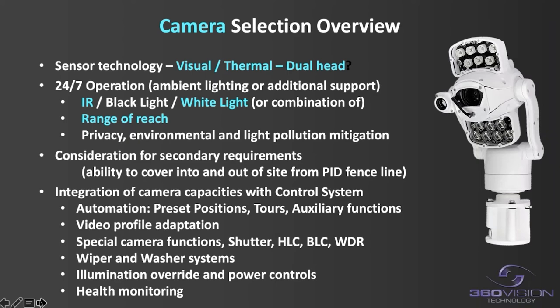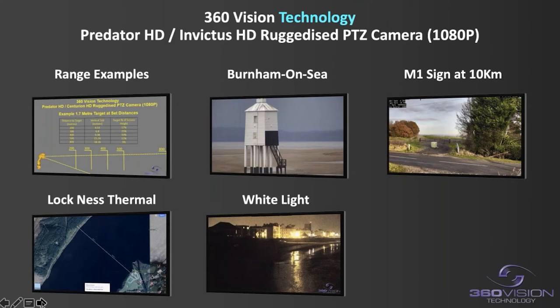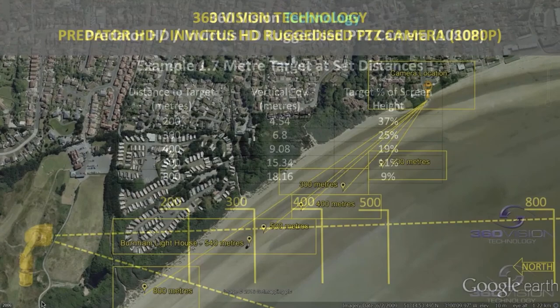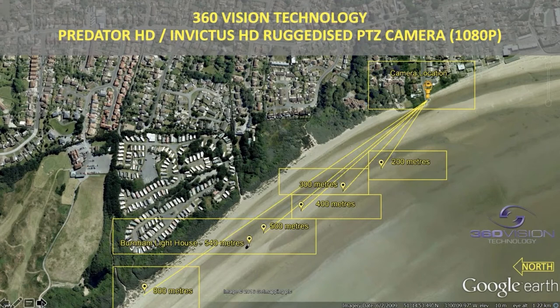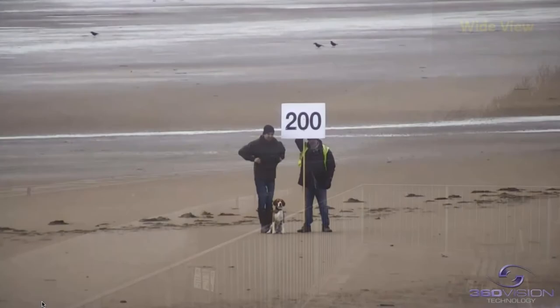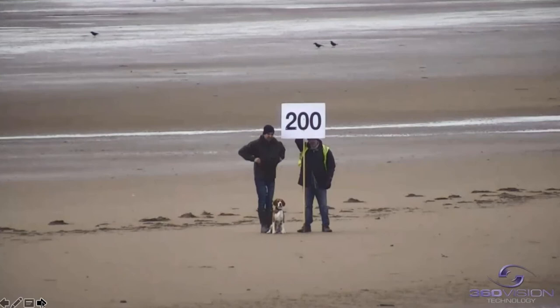These next slides show video capability through still frames taken from live video for the purpose of the webinar. This first one shows range examples. At Burnham-on-Sea, from a wide angle view on a rather nasty day, in the distance in the centre are a couple of gentlemen holding up a sign. Zoomed in at 200 metres, you can get an idea of how large they appear, with a canine in view as well. At 300 metres they're reducing in size but still identifiable. At 800 metres, with targets in the yellow box on screen, you can see they are about 10% of screen height — just within detection of a 1.7-metre target at that distance.